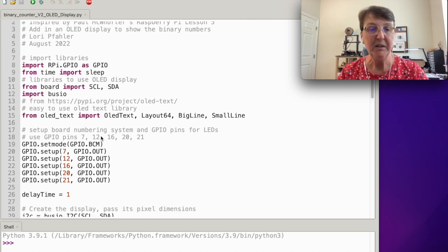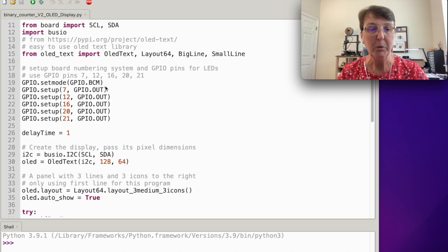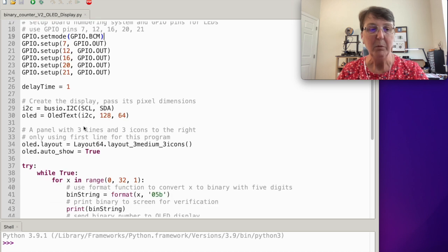Next thing we'll need to do is set up all the pins. We'll use the BCM numbering system because we're using an extension board for Raspberry Pi and that's what's displayed on the extension board. Then here are the five LEDs that I'll use for the binary counter and we'll set them up as outputs. Set up a short delay time because as it's counting I want it to hold the binary number for a second or so so that you can see the number as it goes by.